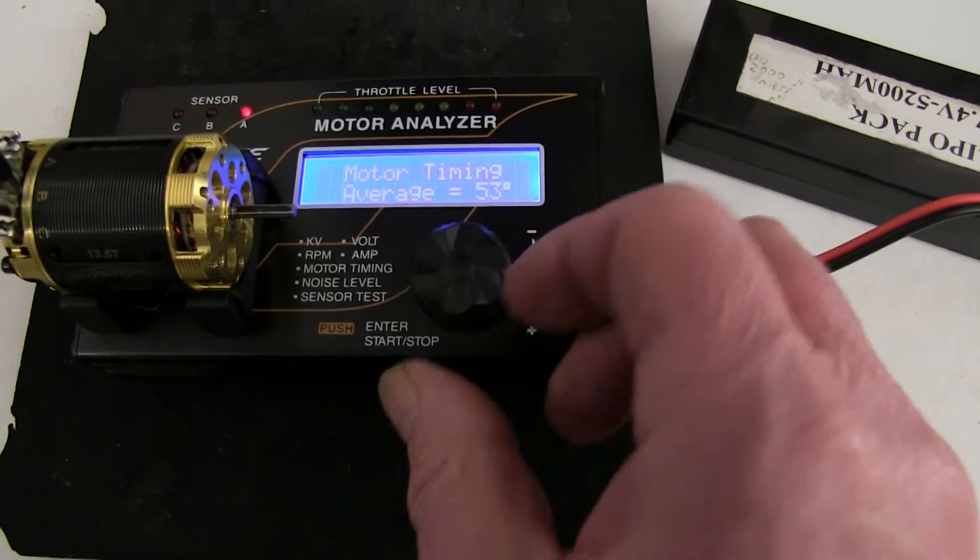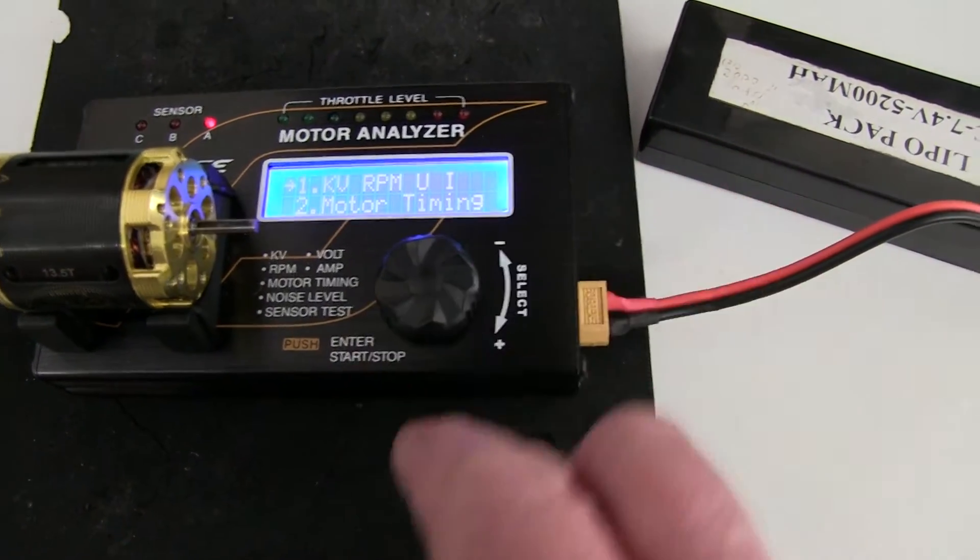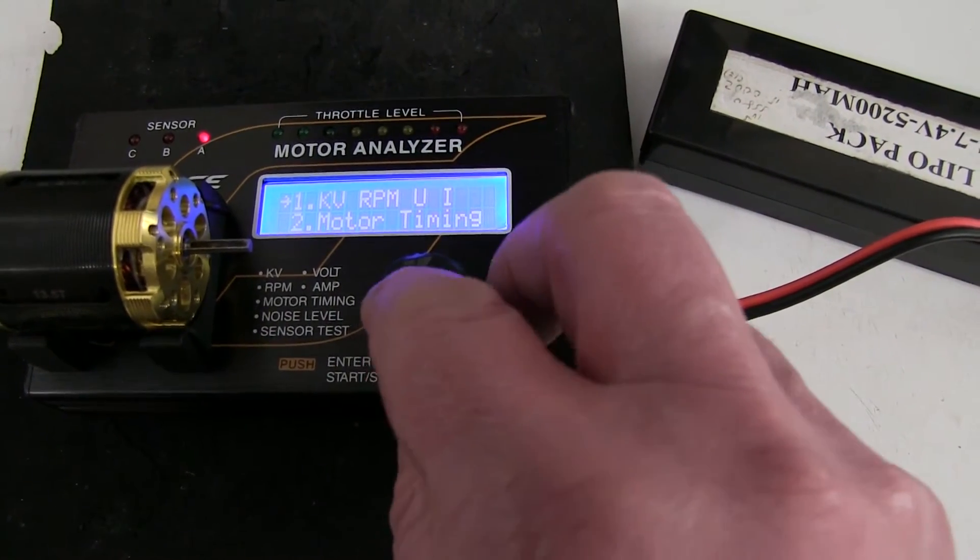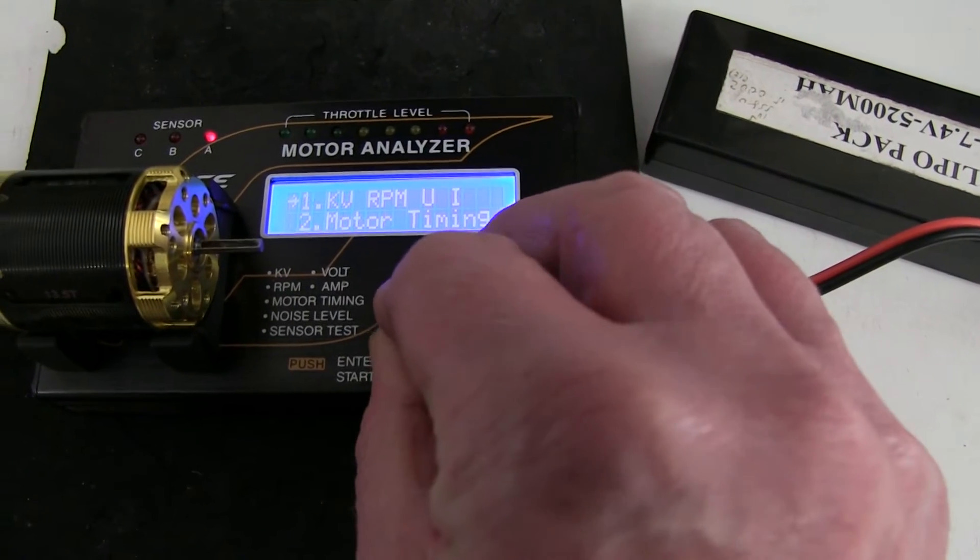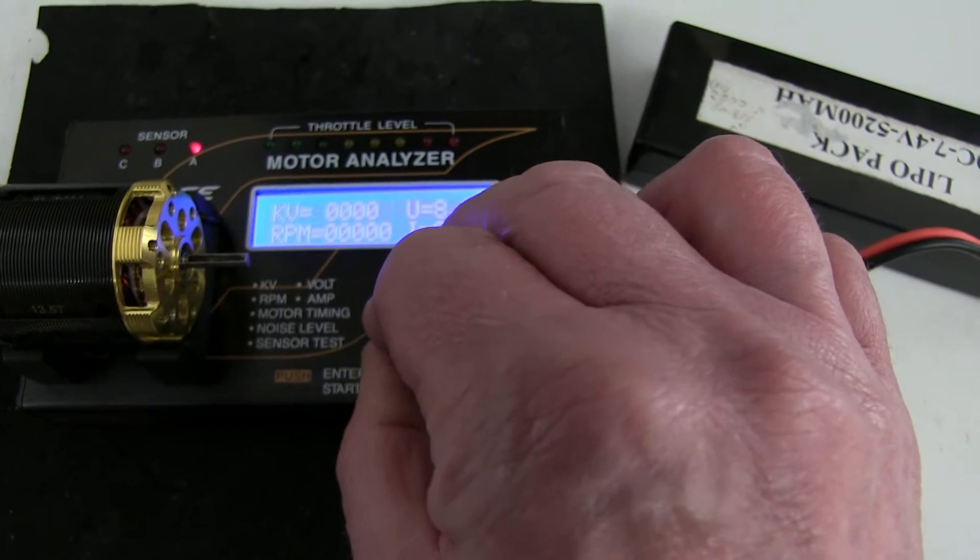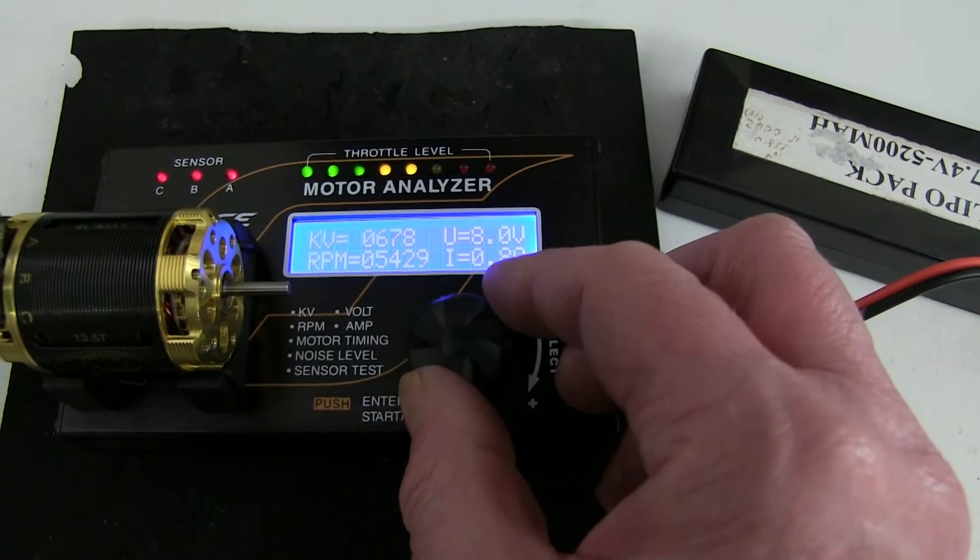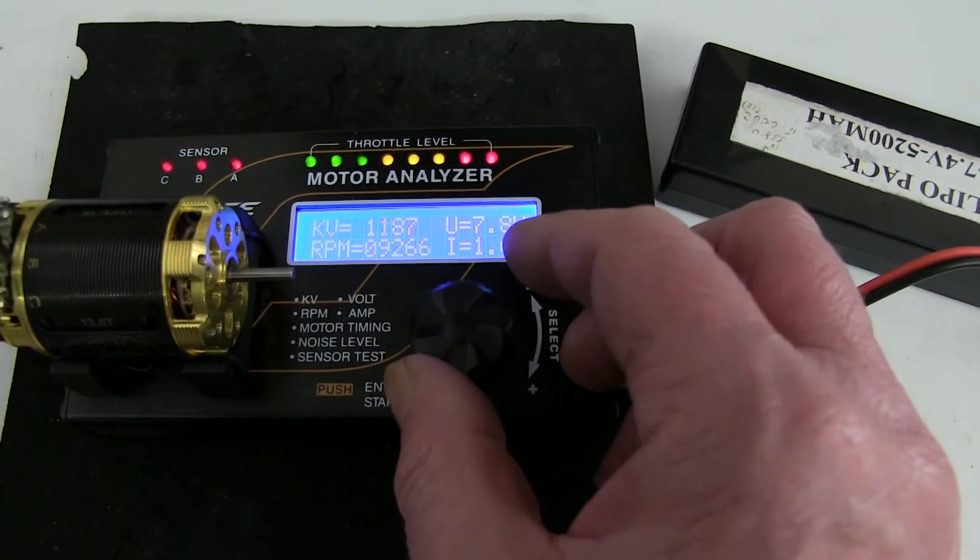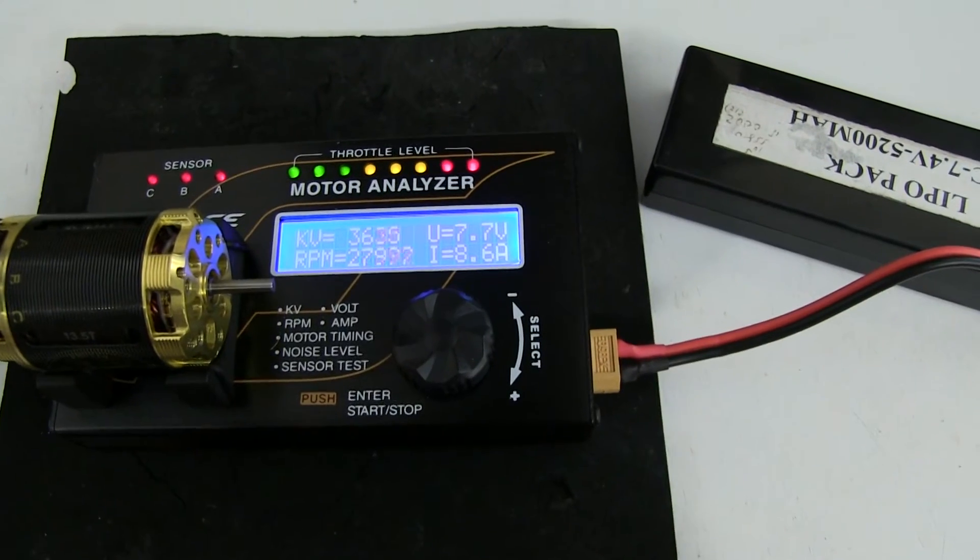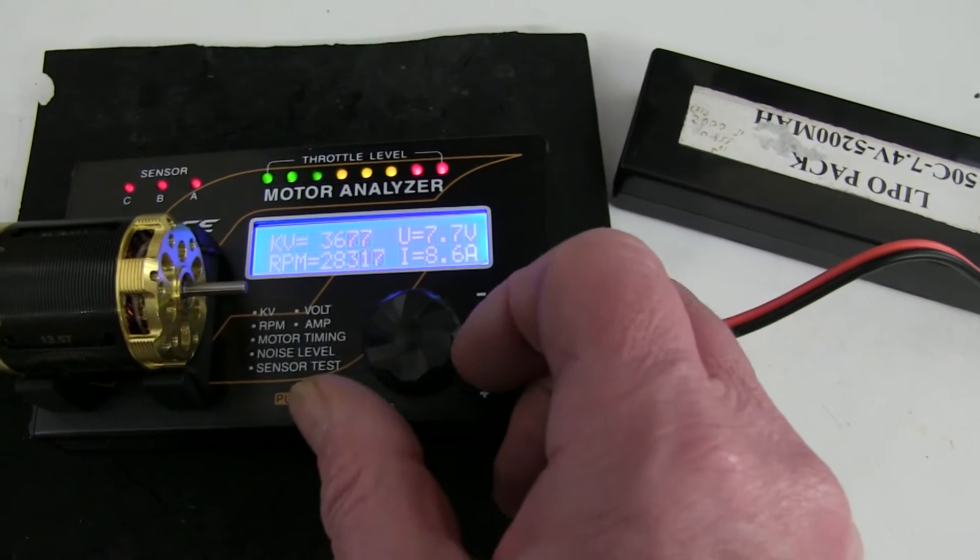Now, because I've put it on the maximum advance, it might be useful to see if the KV rating changes, or whether it makes any difference with this tester. So, I'm going to press that, and turn. Press and turn. Press and turn. Then we'll turn it up. Well, it's now showing 36 KVs, and the current's gone up, so the voltage is a bit lower.